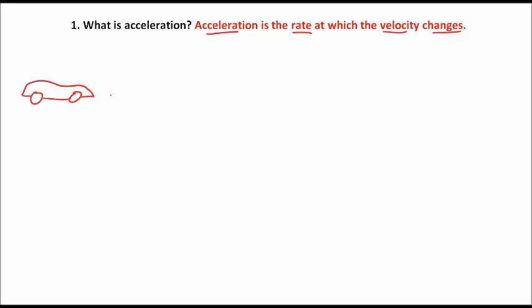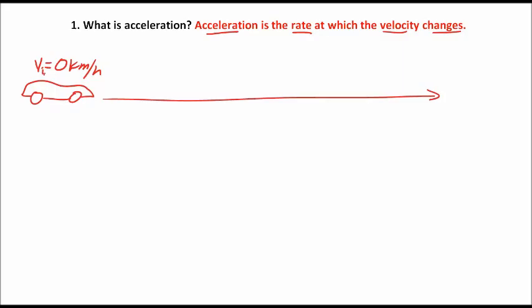Here's our car sitting on the starting line waiting to take off down the track. We'll give this car an initial, or beginning, velocity equal to zero kilometers per hour. We can designate that by writing a little 'I' — a subscript — next to the V for velocity. We read that as V subscript I, or initial velocity. So the initial velocity is equal to zero kilometers per hour.